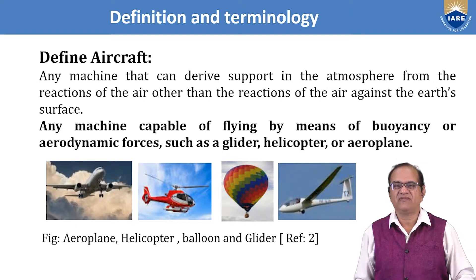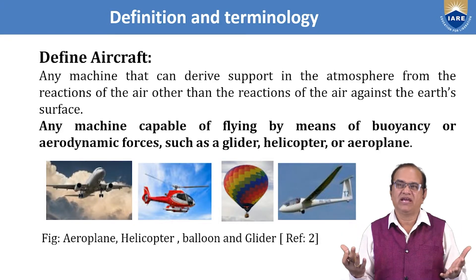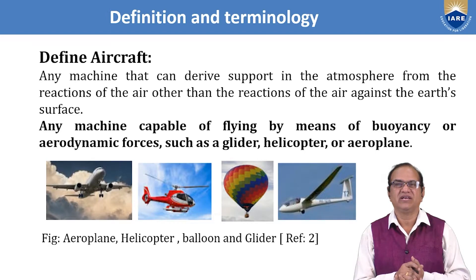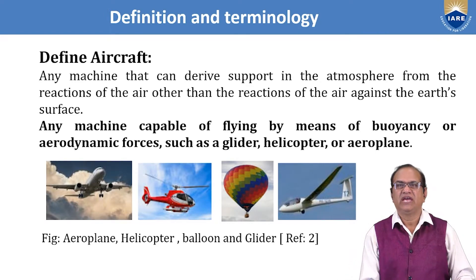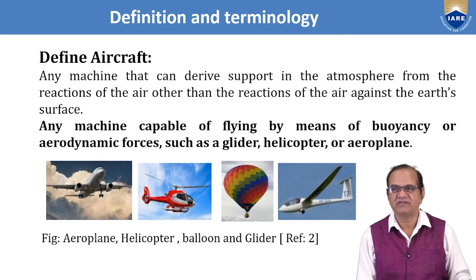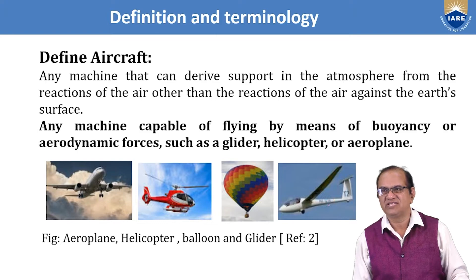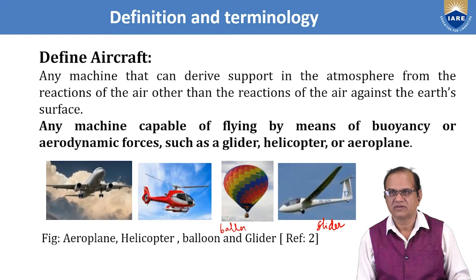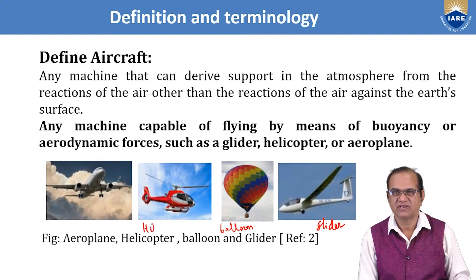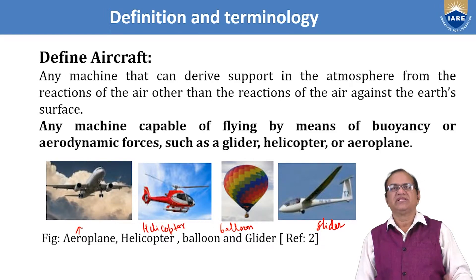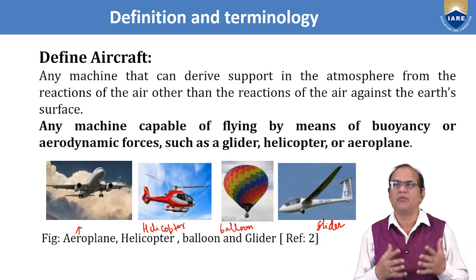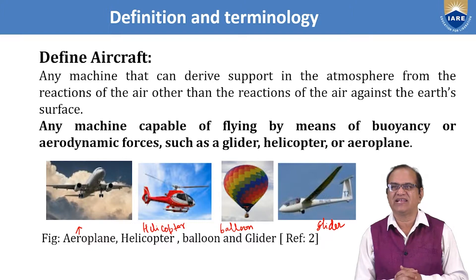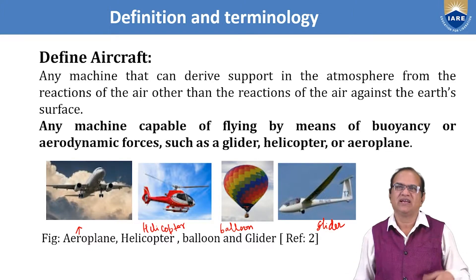Even a balloon is also an aircraft because it can fly using hot gases. So here we have the airplane, helicopter, balloon, and glider — these are all aircraft. Any machine capable of flying by means of buoyancy or aerodynamic forces, such as a glider, helicopter, aeroplane, or balloon, is called an aircraft.